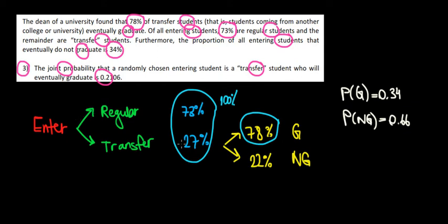How do we explain that the outcome, whether we graduate or not, depends on whether we are regular students or transfer students? That's what we're interested in.